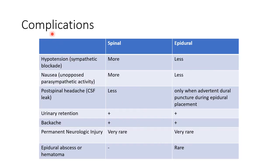Let us see about the complications of these procedures. Hypotension can occur due to sympathetic blockade, and it is more common in spinal anesthesia than epidural anesthesia. Nausea can occur due to unopposed parasympathetic activity, and again, it is more common in spinal anesthesia.